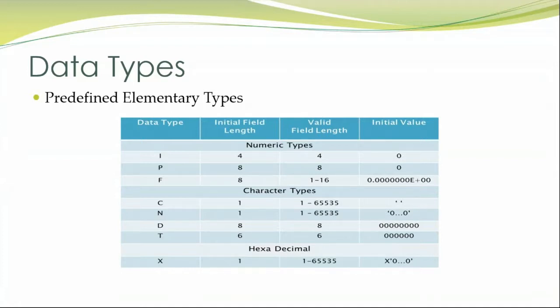Coming to the next category which is called a character type, we have character data type denoted by C, whose initial field length is 1 and it can range till 65,535. The next data type is numeric, denoted by N, which also comes under the character category. Because numeric will accept the numeric digits from 1 to 65,535, it has mostly the properties of a character data type and hence it is categorized under the character type.